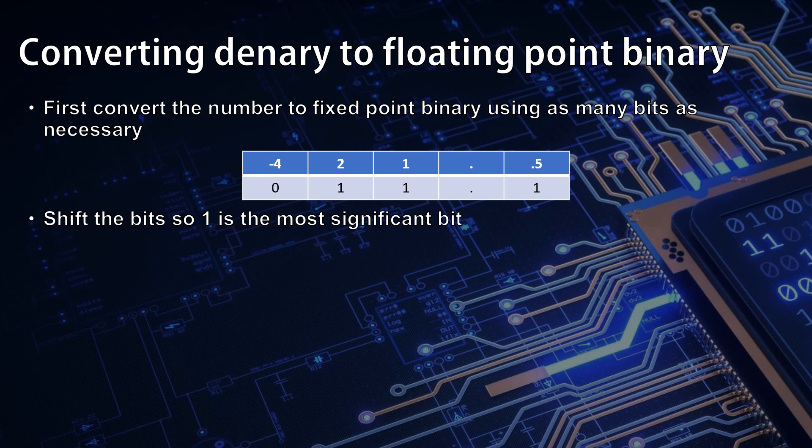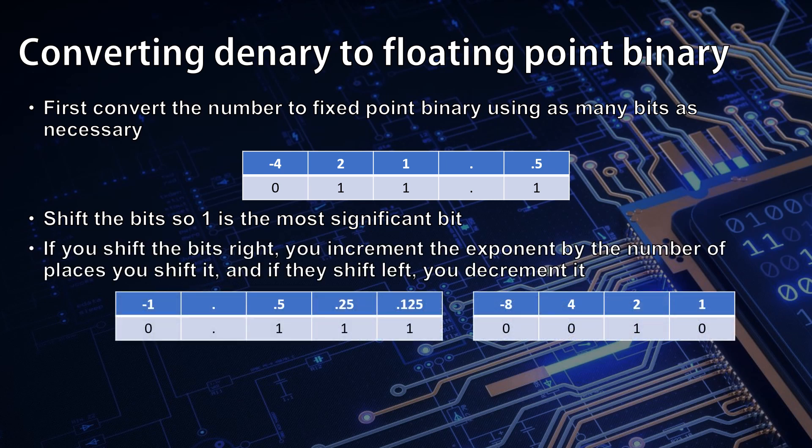Remember that as the most significant bit it will be negative so any positive number will have its first one in the point five column. If you shift all the bits to the right as we have done here you increment the exponent by the number of places you shift it, and if they shift left you decrement it meaning the exponent will be negative. It starts at zero. We've moved two places to the right so we're going to have an exponent of two, that's 0010 in binary.